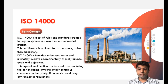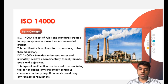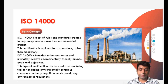Coming to ISO 14000, the basic concept is that it is a set of rules and standards created to help companies address their environmental impact. Most mechanical companies have byproducts which are ultimately harming the environment. The aim of this 14000 norm is to regulate the particular hazards which are given by the company to the environment, so that we will have overall benefit to both the environment and the organization.